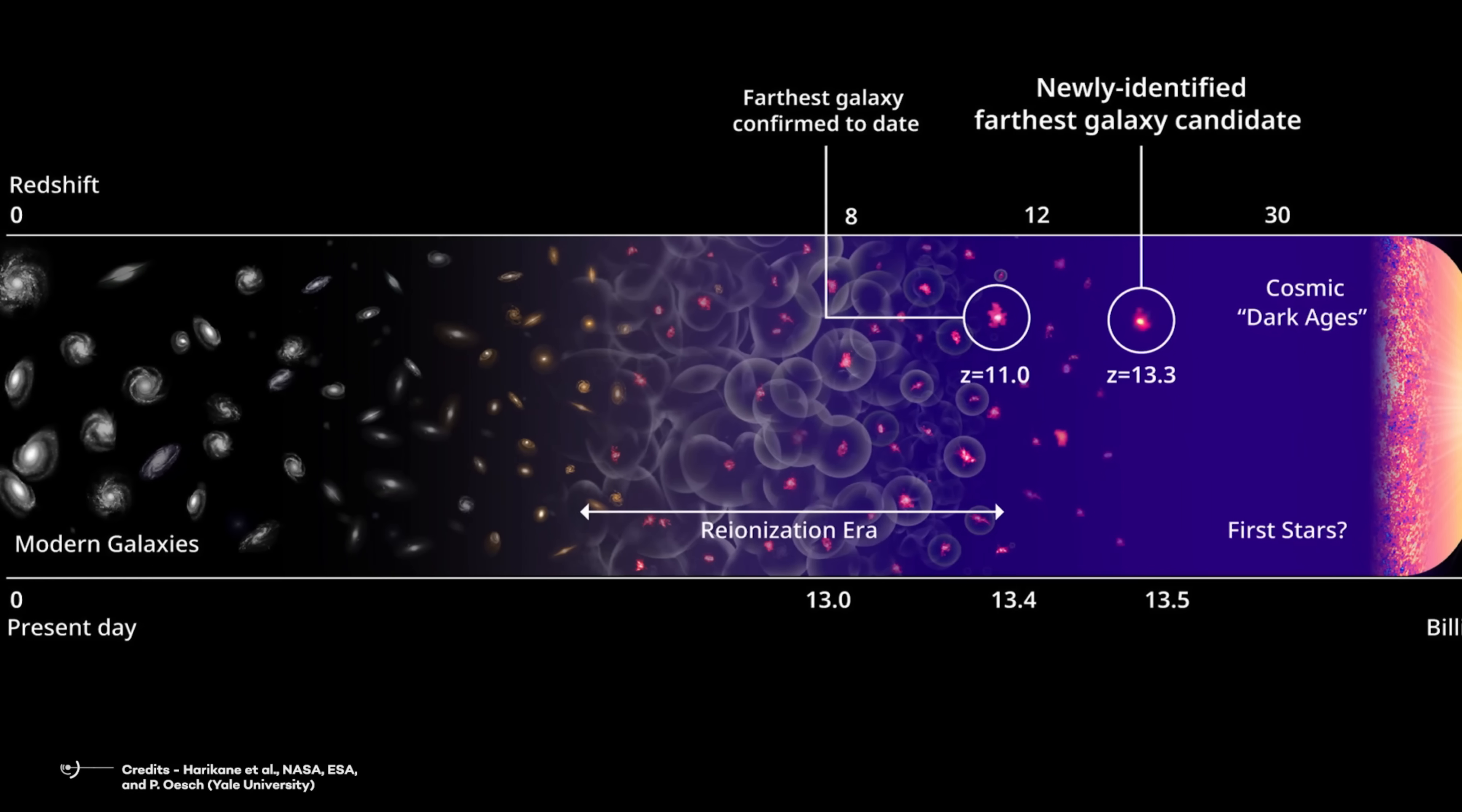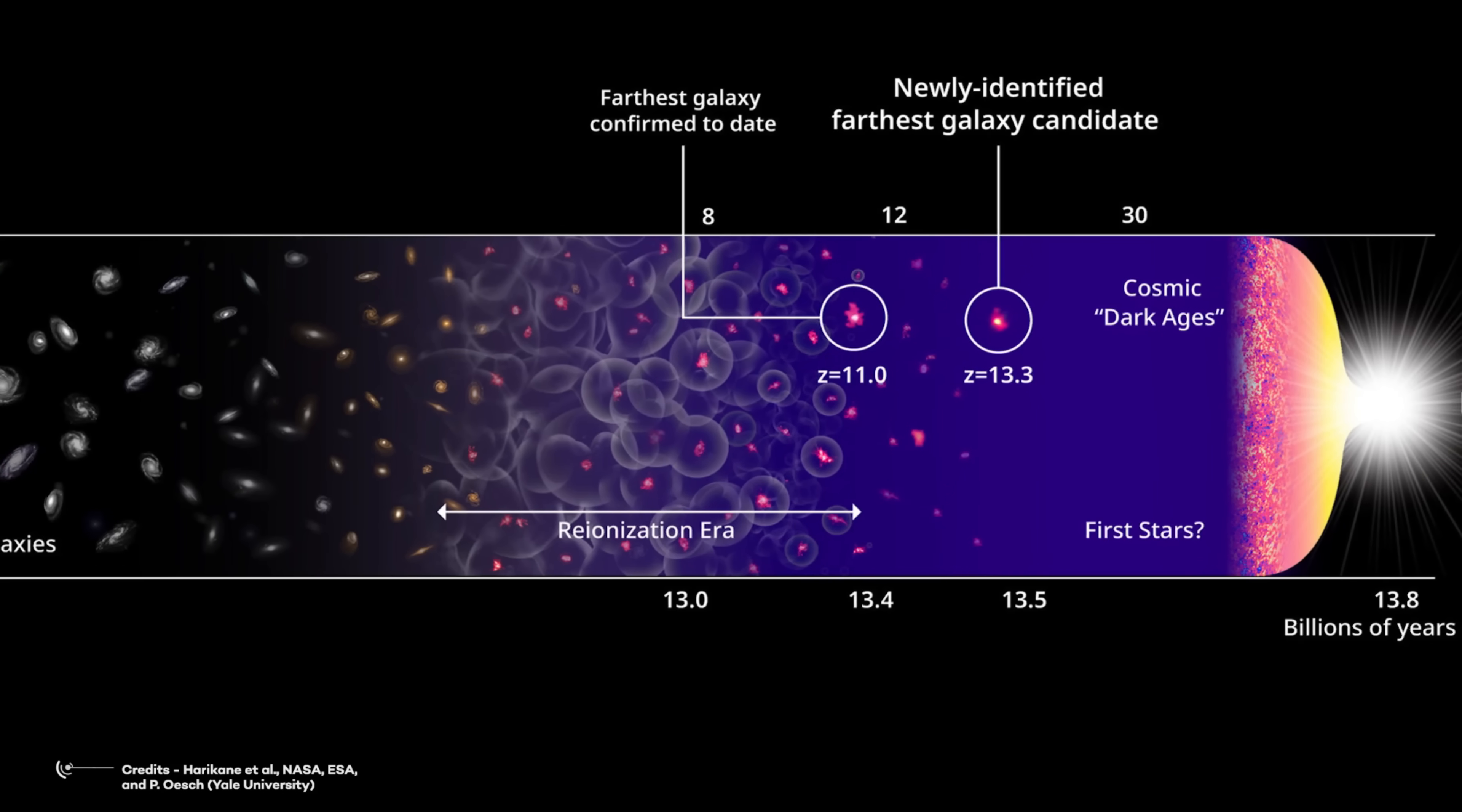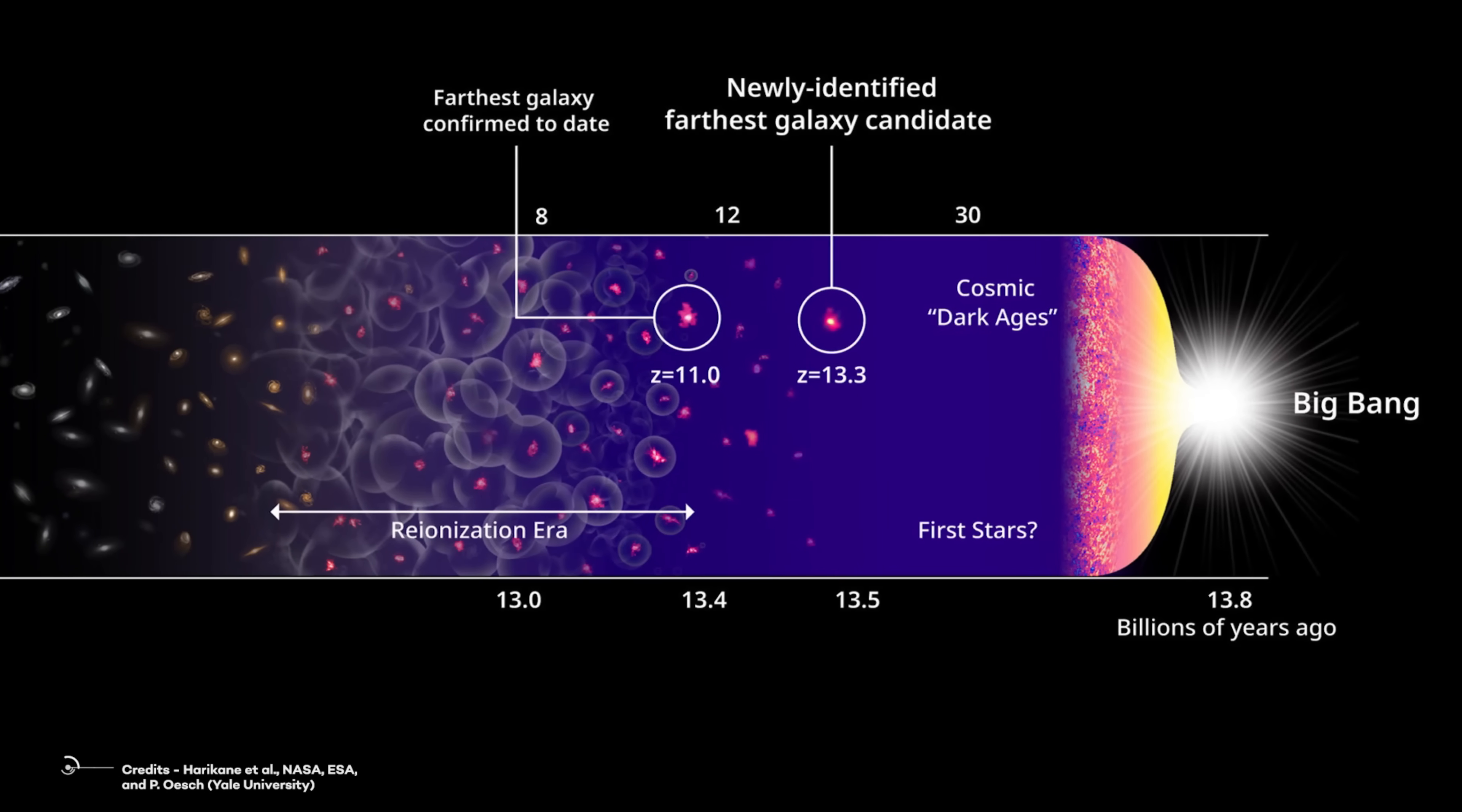The redshift Z was found to be 13.3, which is equivalent to saying that the object is 33.3 billion light years away, and that its light took 13.44 billion light years to reach us, starting 330 million years after the Big Bang.